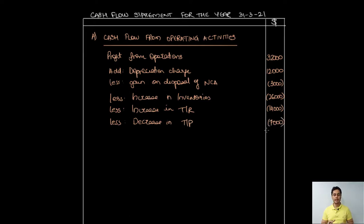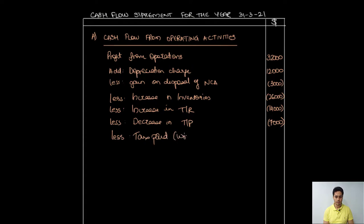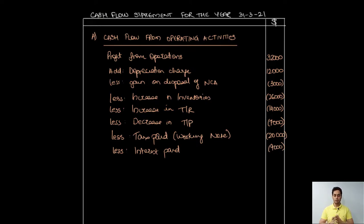Step four is where we deduct tax paid during the year and interest paid during the year — I'll record both in the cash flow from operating activities. This completes cash flow from operating activities. We now take a total of all figures from profit from operations down to interest paid. If the net amount is positive, that shows net cash from operating activities; if negative, it shows cash used in operating activities.